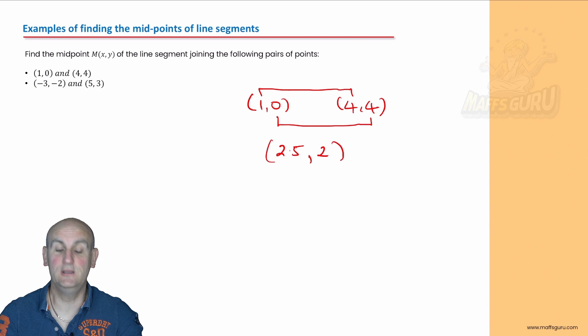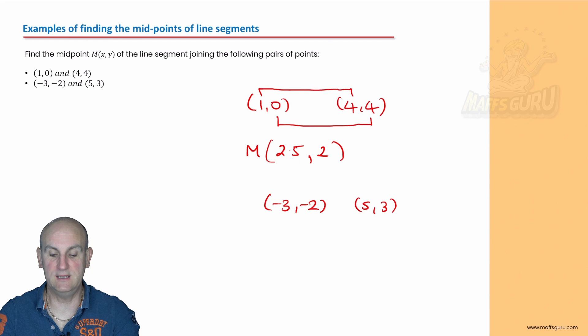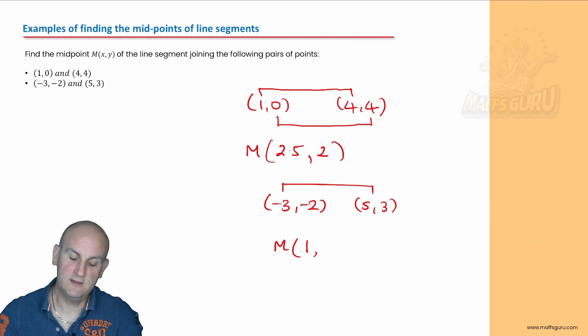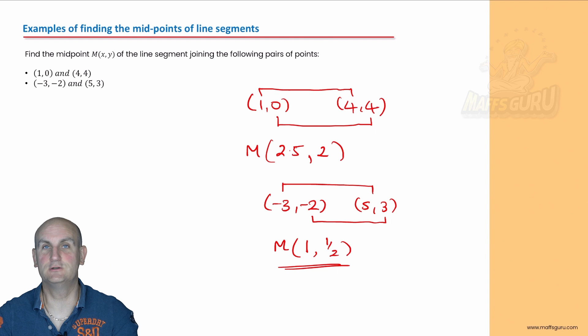Next example: (−3, −2) and (5, 3). Don't get tricked with the negatives. For x: −3 and 5, add them to get 2, halve it gives 1. For y: −2 and 3, add them to get 1, halve it gives ½. So the midpoint M is (1, ½). Finding a midpoint between any two points — easy peasy: add the x's and halve them, add the y's and halve them.